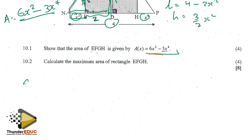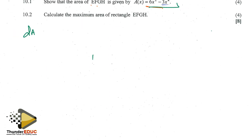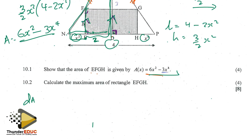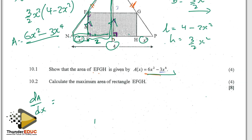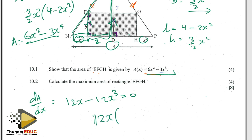To find the maximum area we need to take the derivative, dA/dx. The derivative is 12x minus 12x cubed. Setting this equal to zero and factoring out 12x, we get 12x(1 − x²) = 0.